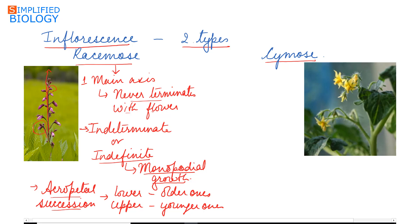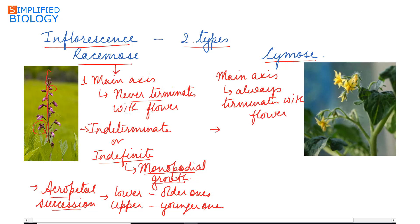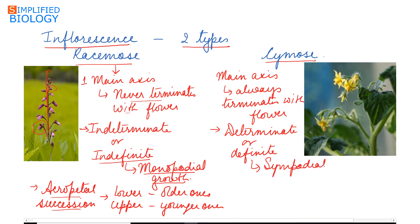In the case of cymose inflorescence, the main axis always terminates with a flower, meaning the main axis has limited or determinate growth. This is known as sympodial growth — when the main axis develops a flower it stops there, and then a lateral branch develops which starts growing and also terminates with a flower.